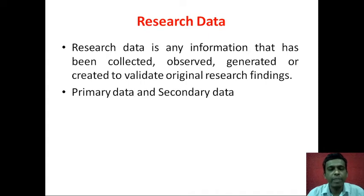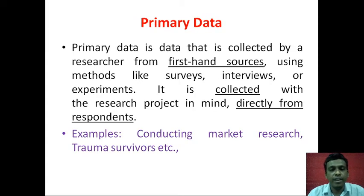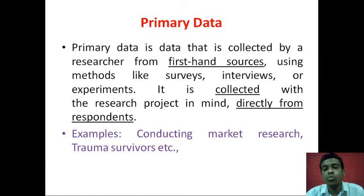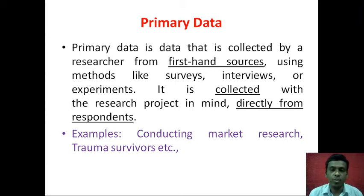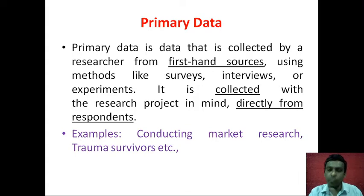Primary data is basically the first-hand data that is collected by the researcher himself. Primary data is data collected from first-hand sources — for example, people who have witnessed a particular incident and you go and interview that person. Suppose there is a robbery that happened in a bank; you go and ask the person who actually witnessed it and record the data. Whatever data you collect directly from the witness is first-hand, or primary, data.